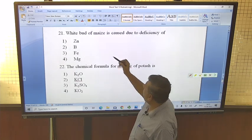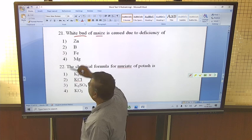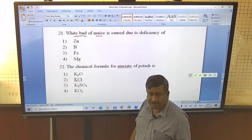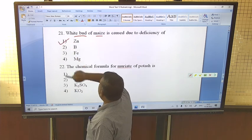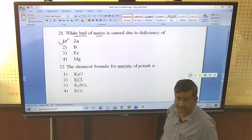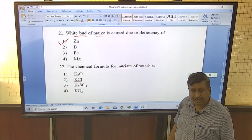White bud of maize is caused due to deficiency of - newly emerged leaves become white, that's why it is called white bud. And it is caused due to zinc deficiency. And zinc deficiency is very common in rice and known as Khaira disease.